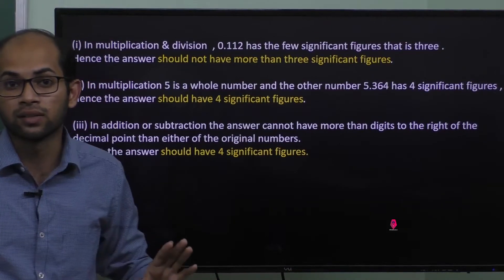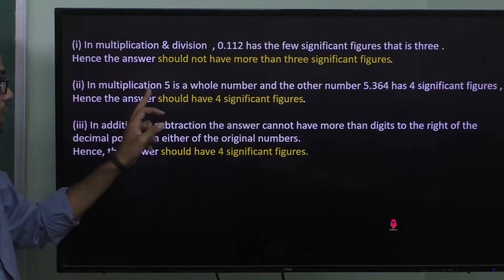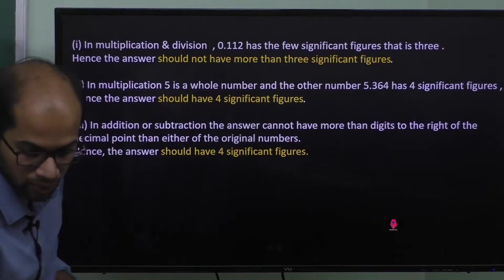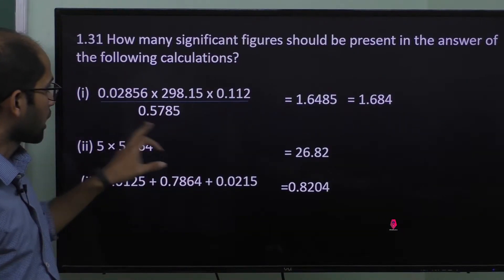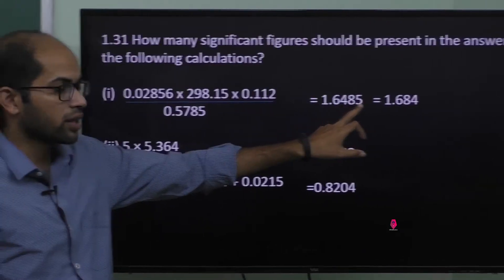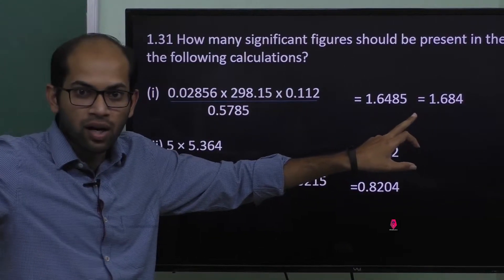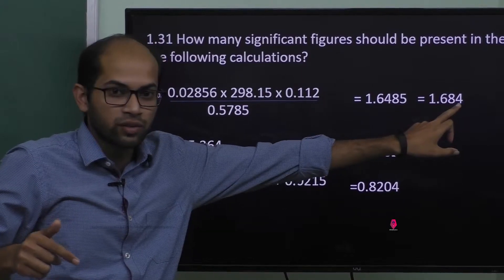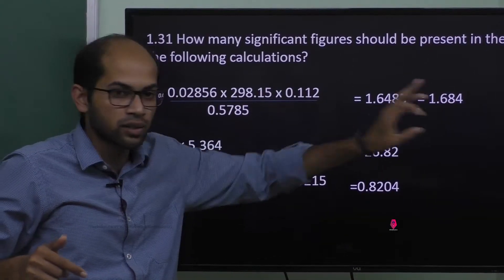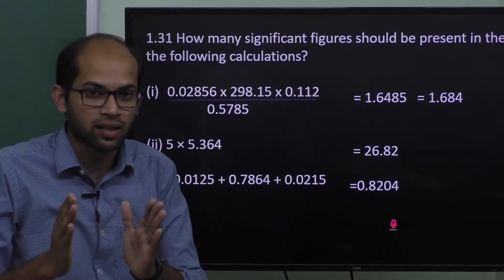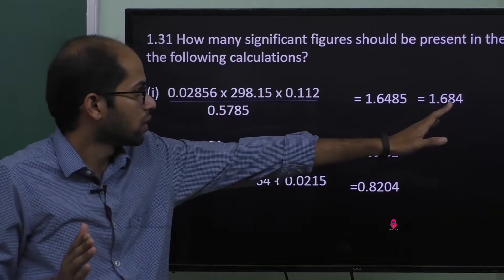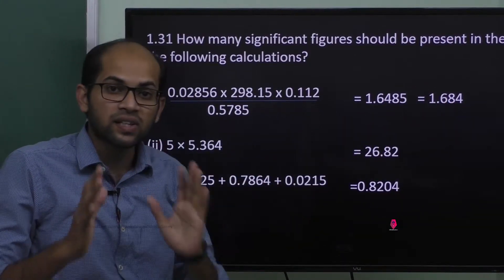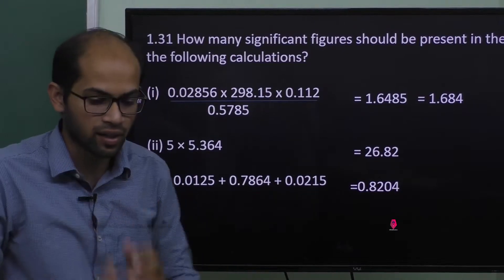How many significant figures should be present in the answer? If you look at the calculation, 1.6485 will be present. Round to 3 significant figures — 1.68 is the answer.